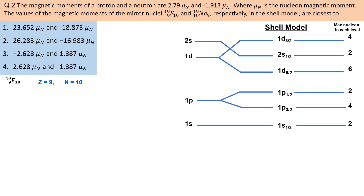Shell model mein normal tarike se 9 protons ko arrange karein to: pehle 2 proton 1s1/2 level mein, next 4 protons 1p3/2 level mein, next 2 proton 1p1/2 level mein, aur last proton 1d5/2 level mein arrange hone chahiye. Lekin shell model mein bhi kuch kamiyan hain — kuch nuclei ke liye yah model poori tarah fail ho jaata hai. Fluorine-19 ke liye last unpaired proton 1d5/2 level mein hone se angular momentum 5/2 hona chahiye, lekin experimentally fluorine-19 ka angular momentum 1/2 hota hai. Yah tab hi ho sakta hai jab last unpaired proton 2s1/2 level mein arrange ho, jo shell model explain nahin kar paati.